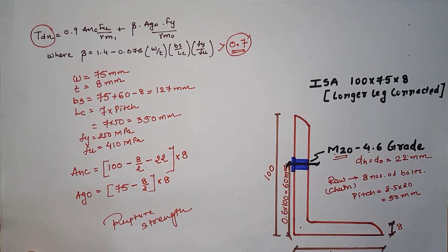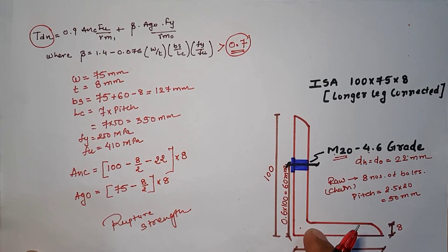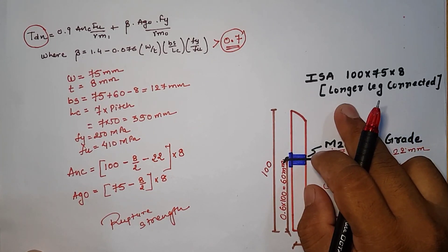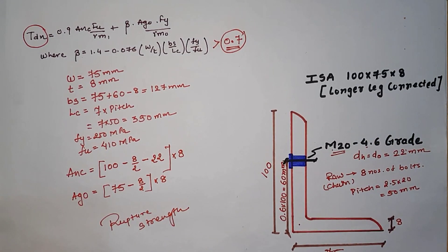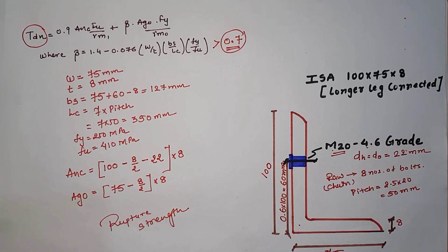Thus the rupture strength is calculated for the angle section or the Indian standard angle section according to the longer leg connected or shorter leg connected. If you have any query, you can mail me. My mail id is described in the description link. Thank you.